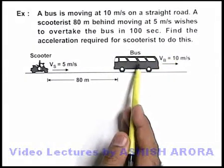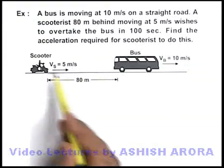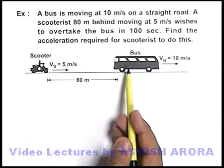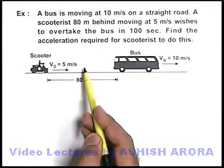Obviously, as it is moving slower than the bus with uniform speed, the separation between the two will increase, so he will not be able to overtake the bus. If he wishes to overtake the bus, he needs to accelerate his speed.